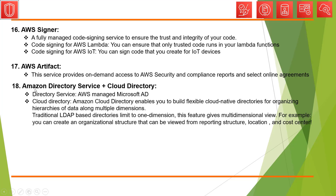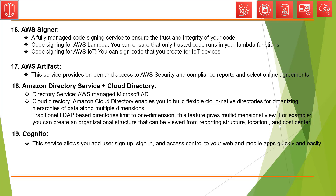The next service is Amazon Directory Service, or Cloud Directory. Directory Service is equivalent to AWS Managed Microsoft Active Directory. If you don't want to use Active Directory, you can leverage Cloud Directory features to create multi-dimensional directories. Compared to traditional LDAP-based directories, which are limited to one dimension, Cloud Directory lets you create multi-dimensional views — for example, an organizational structure viewable from a reporting structure, location, or cost center perspective.